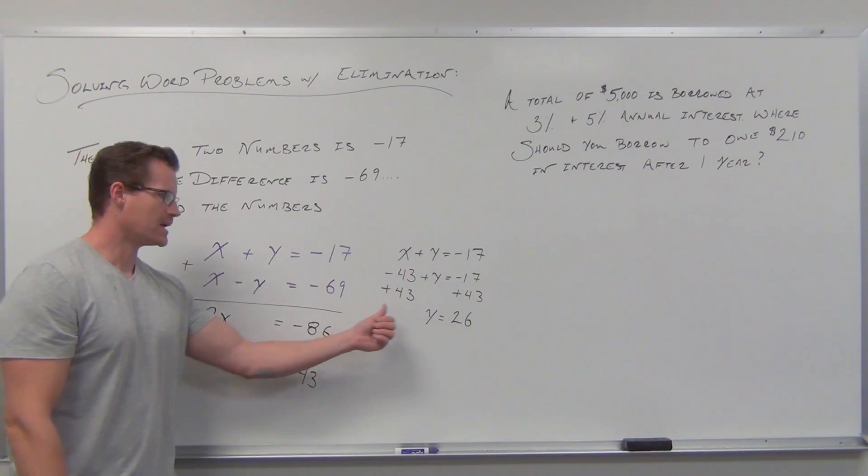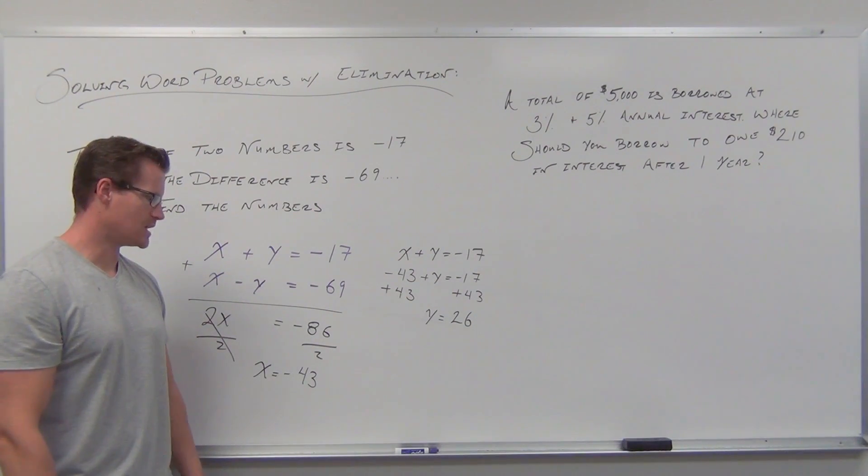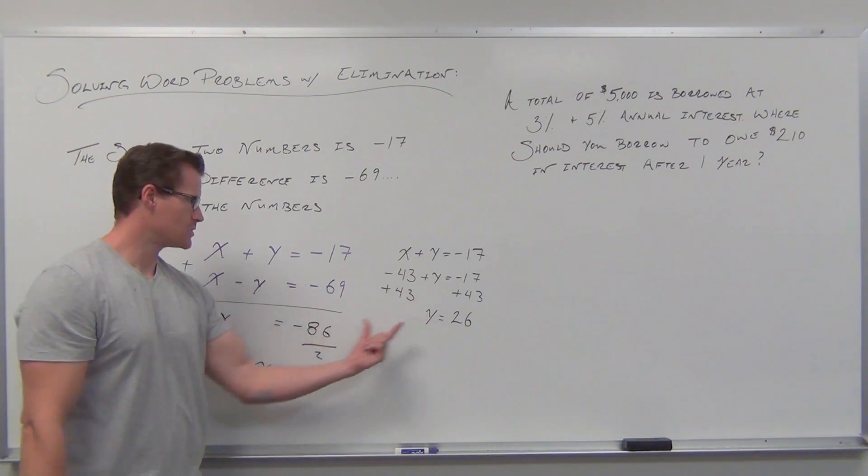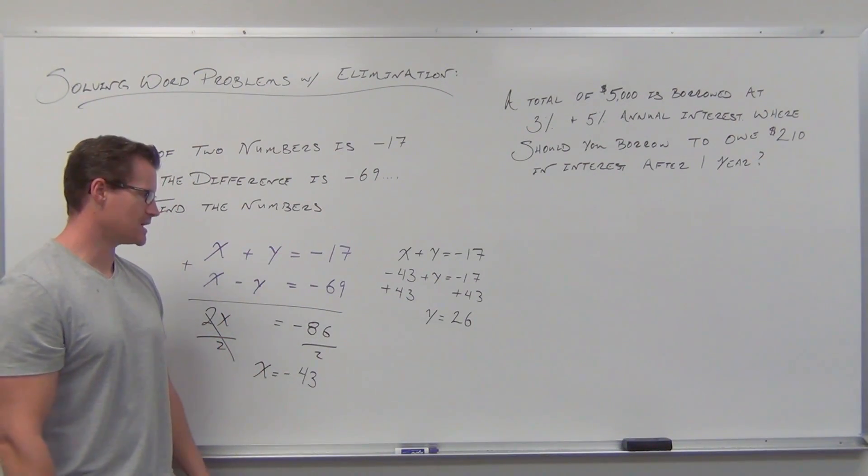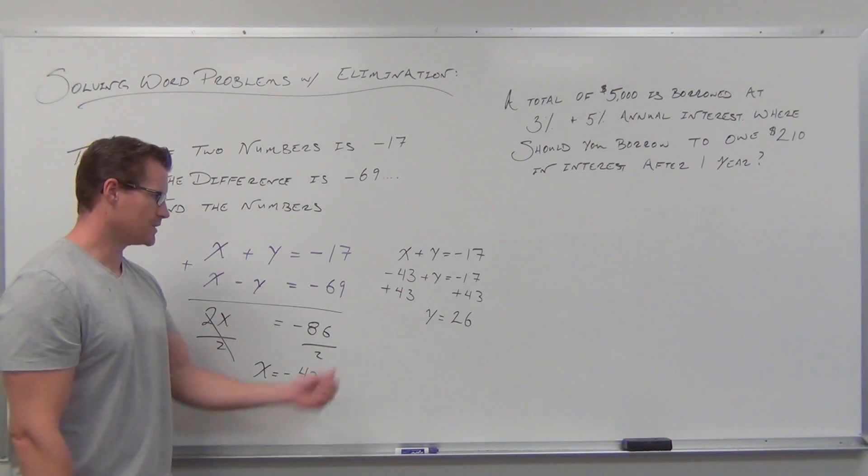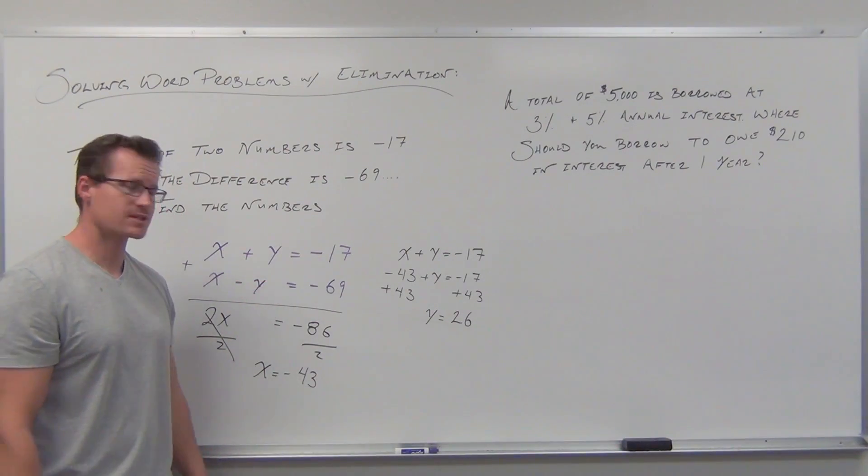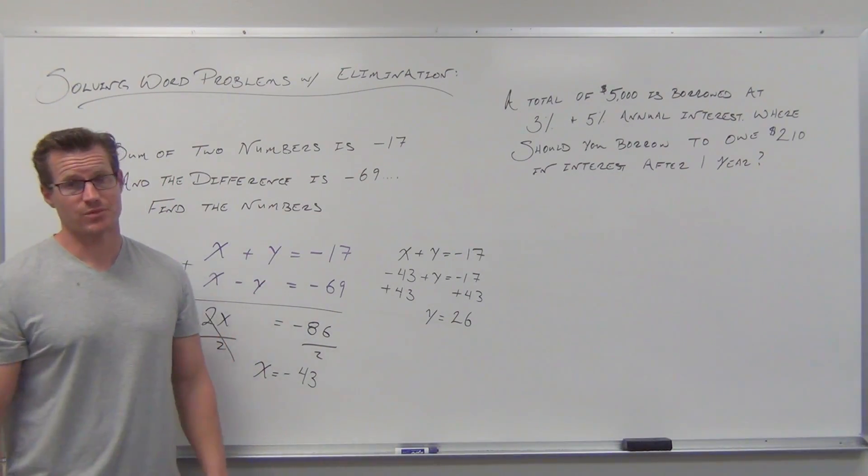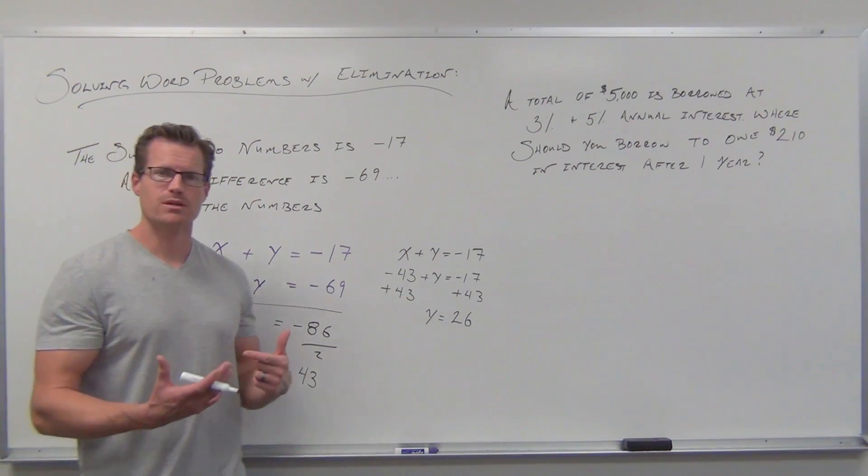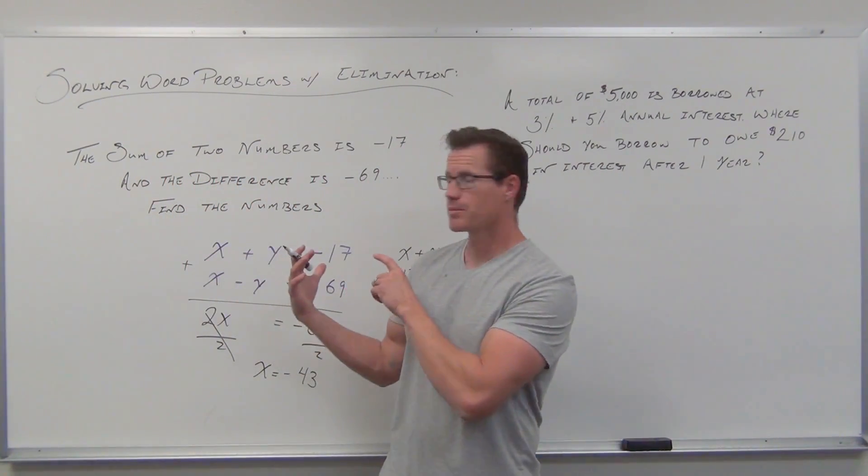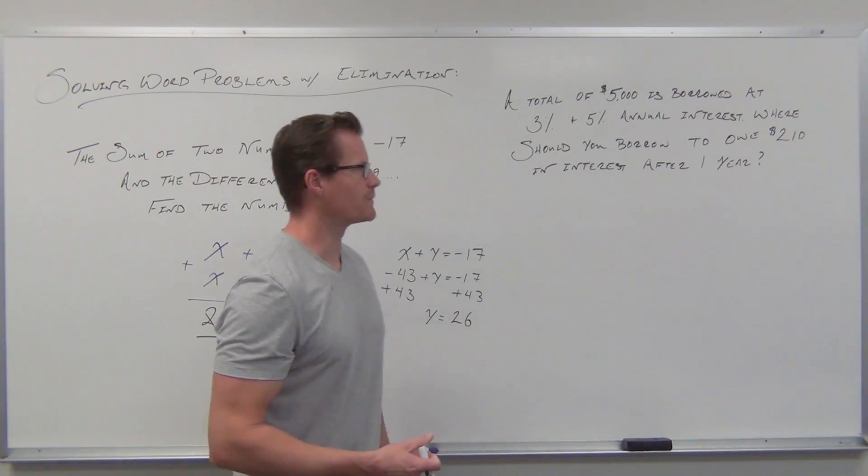Let's check. Does -43 + 26 equal -17? Yes. Does -43 - 26 equal -69? Yes. These are the two numbers. That's one way we can use systems to solve word problems, a basic example.